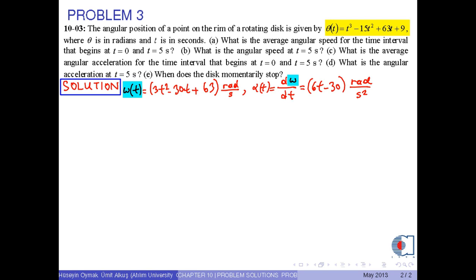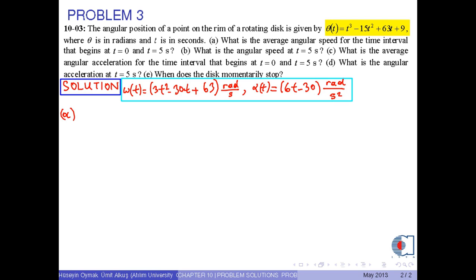In part a, to find the average angular speed for the time interval that begins at t equals 0 and t equals 5 seconds, we first find the angular position at these times. Theta at t equals 0 is equal to 0 cubed minus 15 times 0 squared plus 63 times 0 plus 9, and the result is 9 radians.